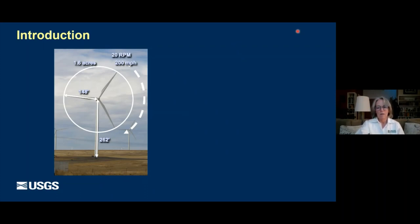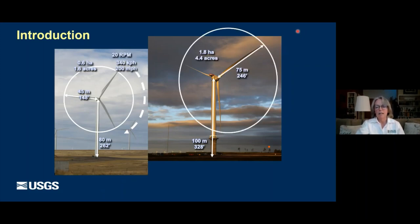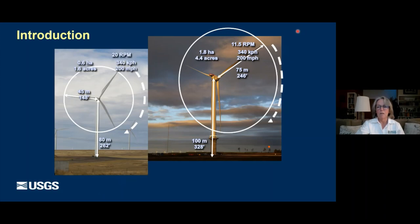Since then, our modern turbines are now 100 meters tall at the nacelle — the place where the turbine mechanisms are. Their blades are 75 meters long. They sweep 1.8 hectares, or three times as much area. But they don't revolve any faster; their rotation speed is actually quite a bit less than for the smaller turbines, resulting in a tip speed of about the same. That may have implications for their impacts to wildlife.